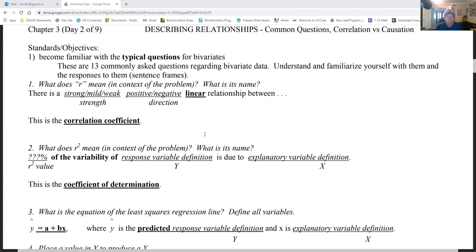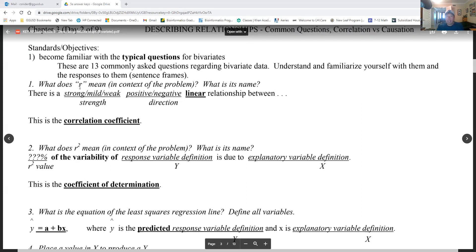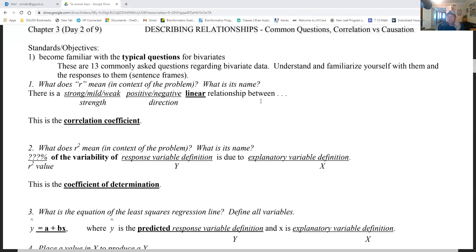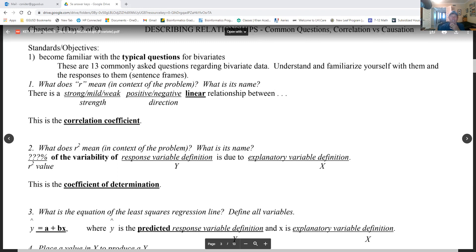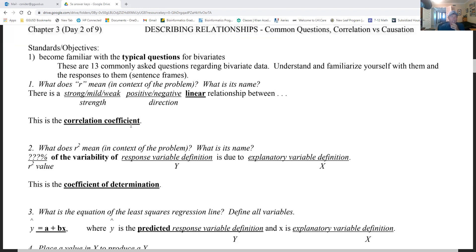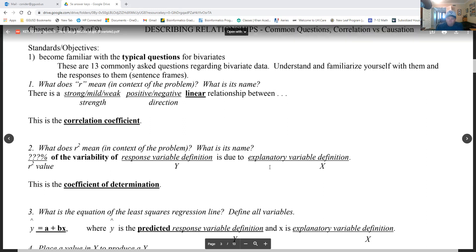So the first question they may ask is: what does r mean in context of the problem and what's its name? R is called the correlation coefficient. Why it's not called c, because I think c is already taken in ax squared plus bx plus c, so they use r for whatever reason. My recommendation to you is that you use the qualifiers strong, mild, or weak.